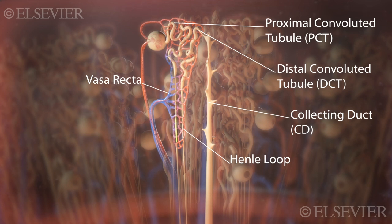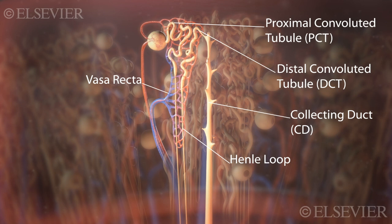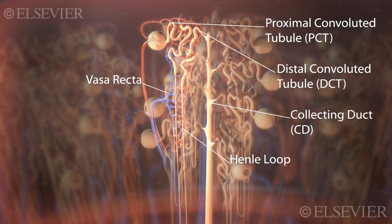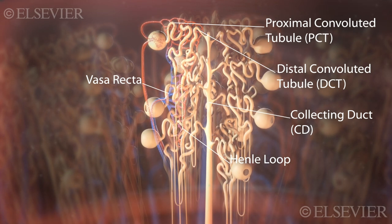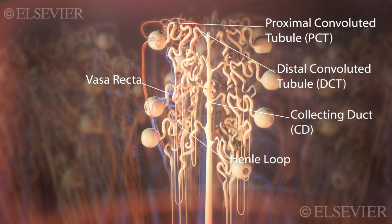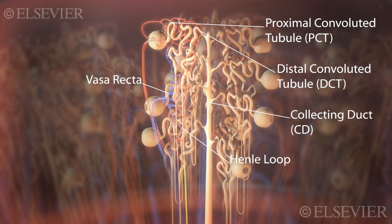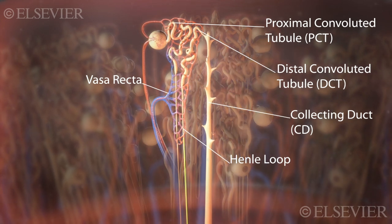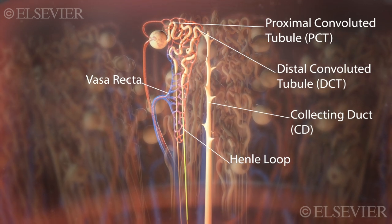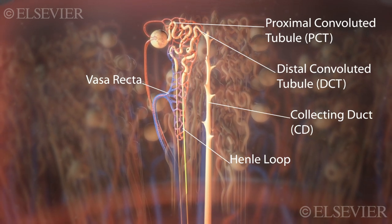The length of the loop of Henle plays a role in how dilute or how concentrated urine is. The DCTs of many nephrons connect to a collecting duct. By the time filtrate reaches the end of the collecting duct, it is fully processed and has become urine.